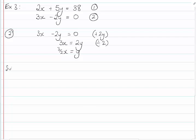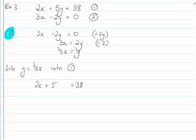Now I'm going to substitute in y equals 3 over 2x into equation 1. Because I've already used equation 2. Just be aware of that. So I get 2x plus 5 equals 38. And that 5 is 5 times 3 over 2x. That gives me 2x plus 15 over 2x equals 38.